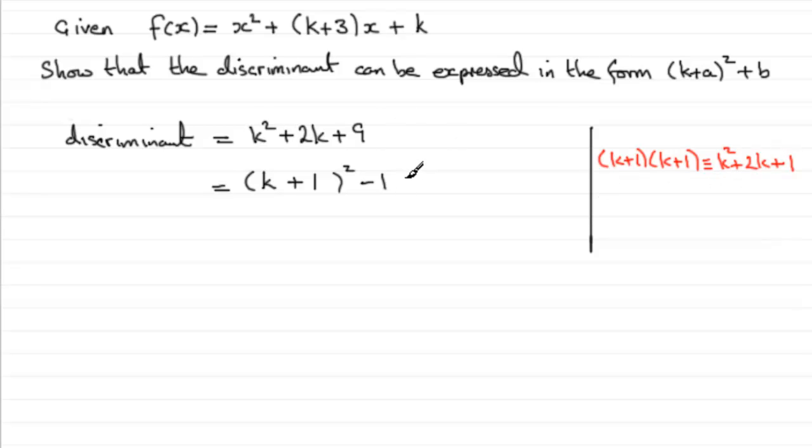But we want the 9, so we just put it back in. So you can see that this is the same as K plus 1 all squared, and then minus 1 plus 9 is plus 8.